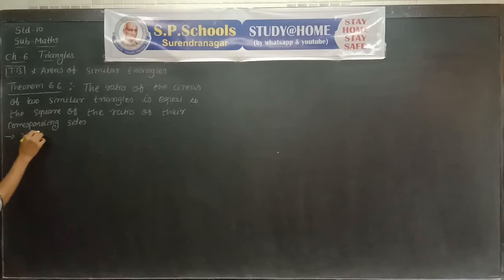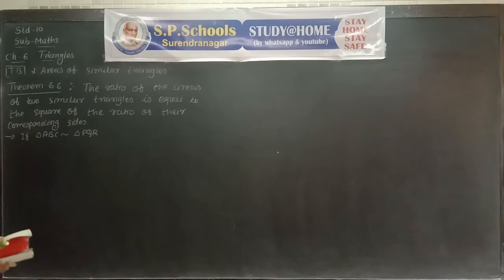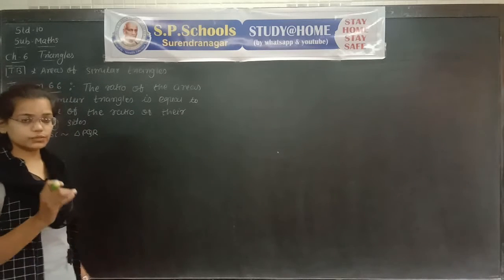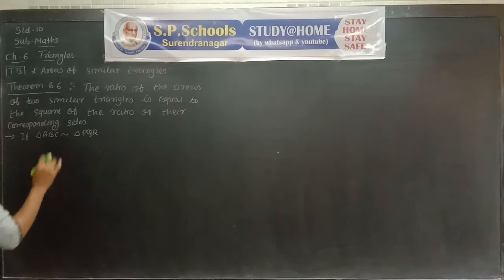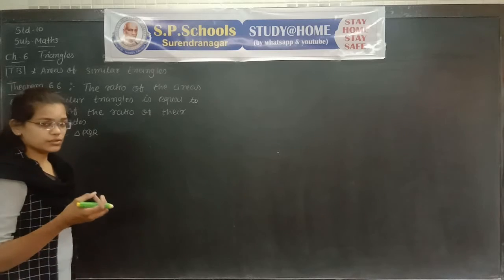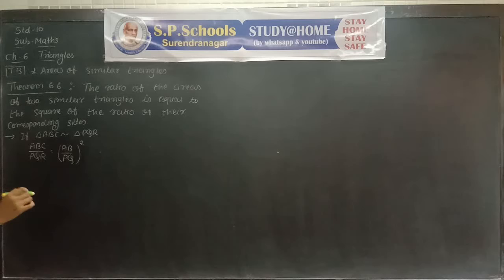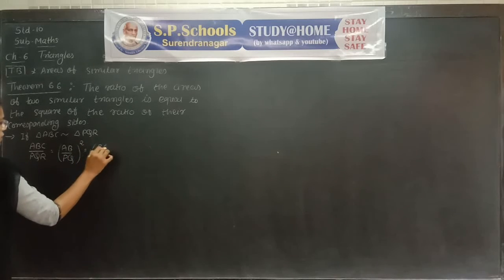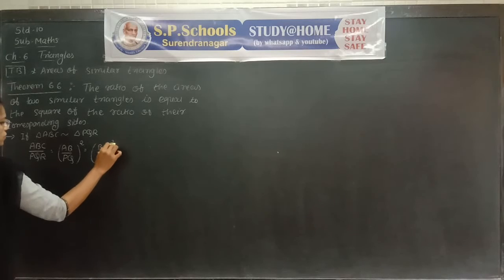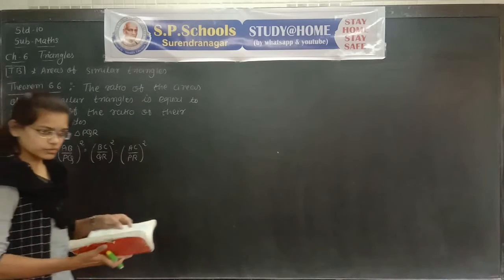The statement of Theorem 6.6: if triangle ABC is similar to triangle PQR, then the ratio of the areas of the two similar triangles equals the square of the ratio of their corresponding sides. That is: area(ABC) / area(PQR) equals (AB/PQ)² equals (BC/QR)² equals (AC/PR)². This result is used to solve problems.